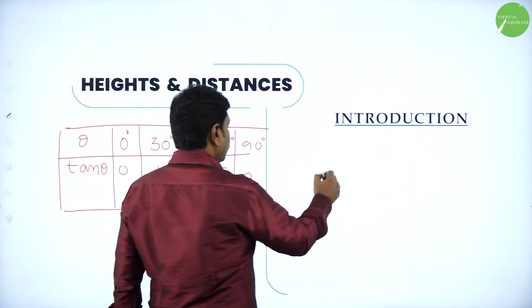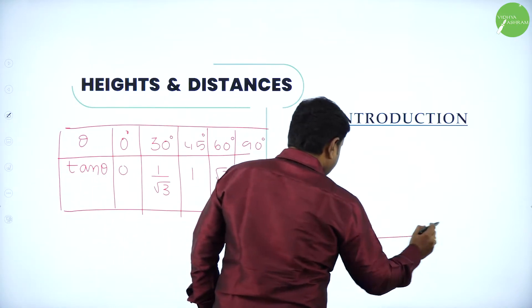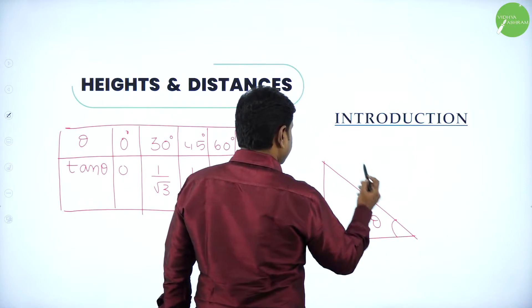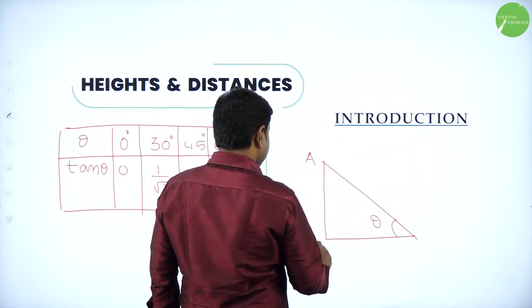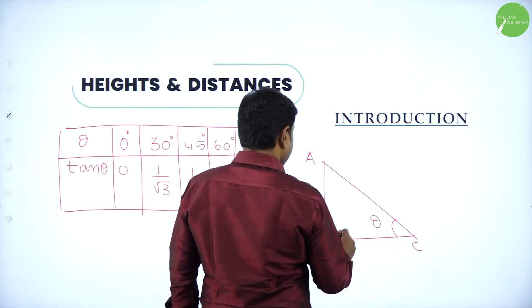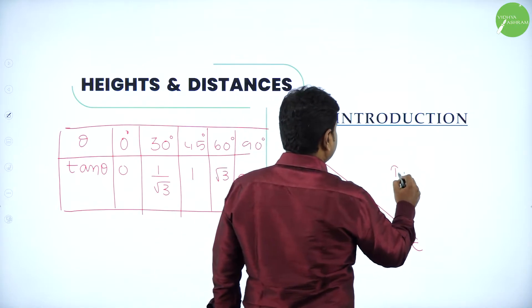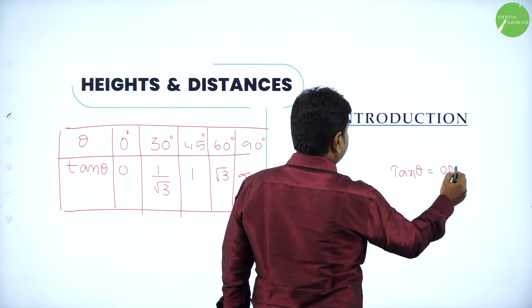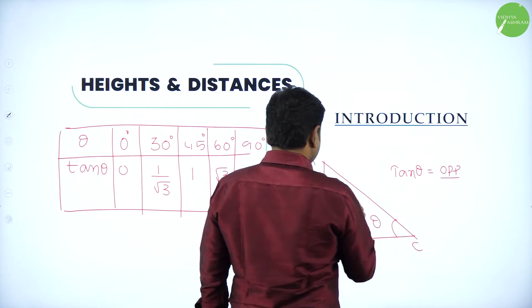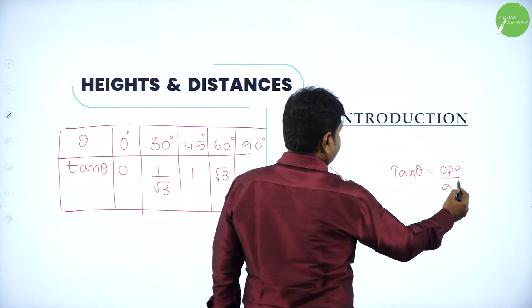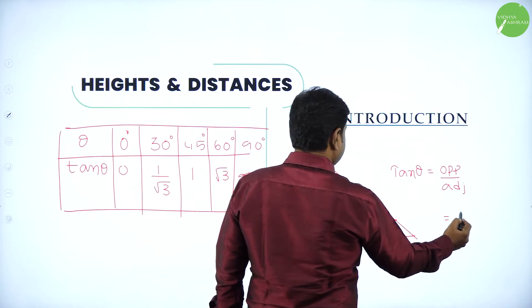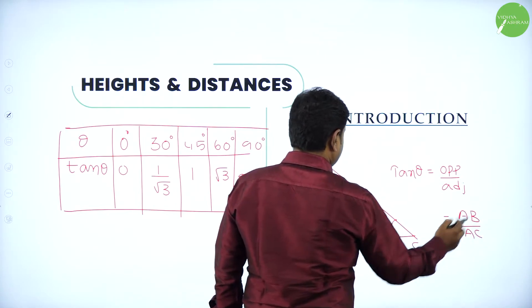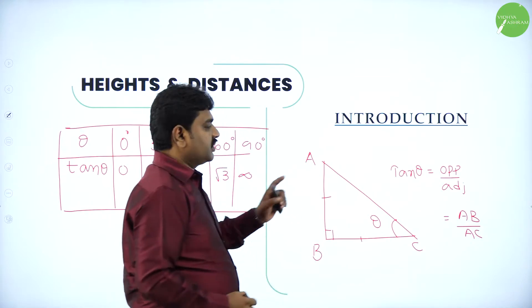If you take any right angle triangle — say this is a right angle triangle with vertices A, B, C and angle theta — what is tan theta? Tan theta means opposite side divided by adjacent. That is, opposite is AB and adjacent is AC. This is the basic we use.